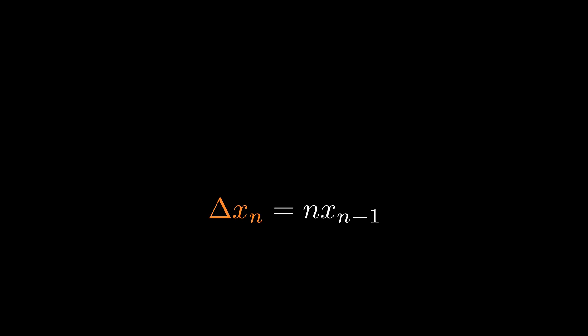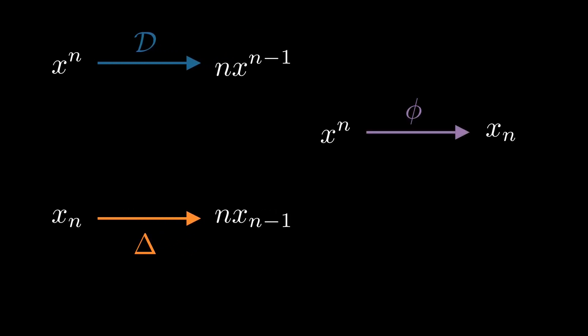So we have these two eerily similar equations, seemingly hinting at some connection between classical and discrete calculus. What can we do with them? Well, what if we introduce a new linear operator—let's call it phi—that transforms powers of x into the corresponding falling powers.